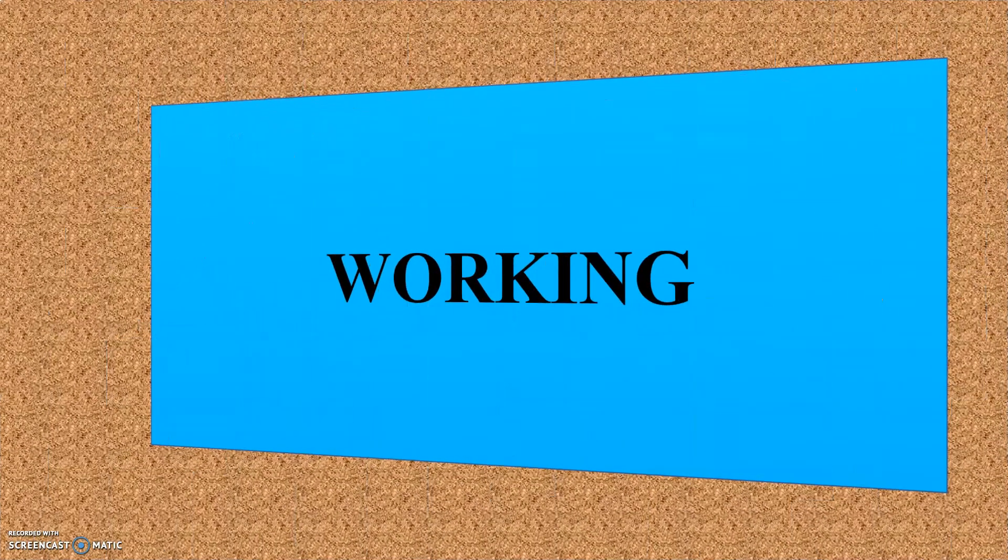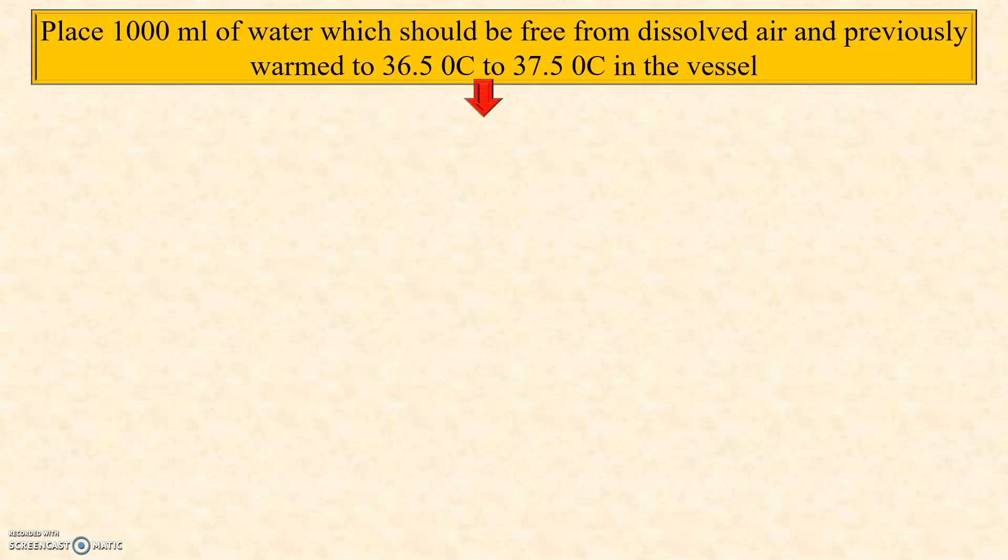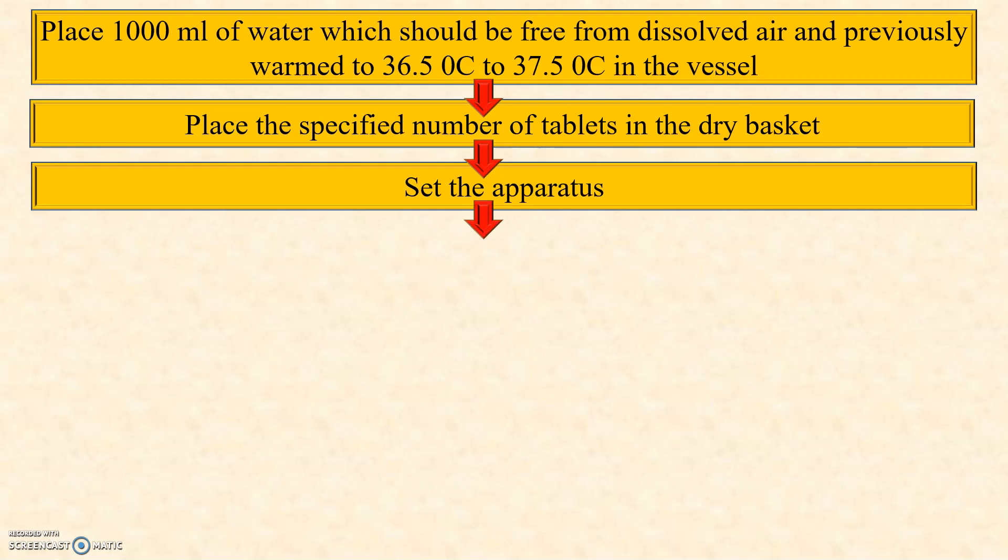Now let us see the working of dissolution test apparatus. First place 1000 ml of water which should be free from dissolved air and previously warmed to 36.5 to 37.5 degree Celsius in the vessel. Then place the specified number of tablets in the dry basket and set the apparatus.